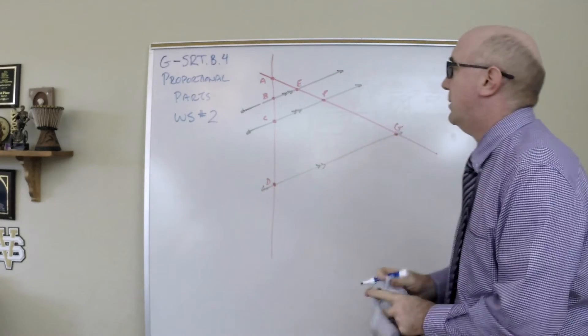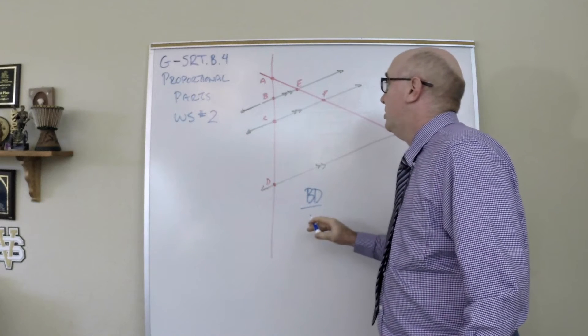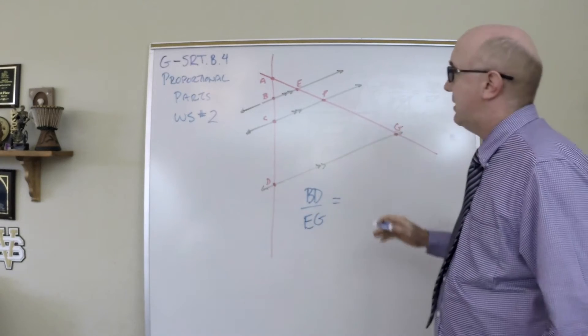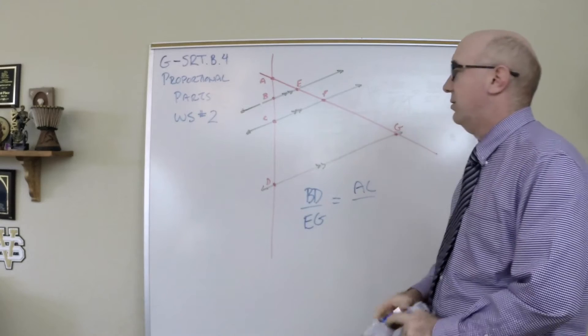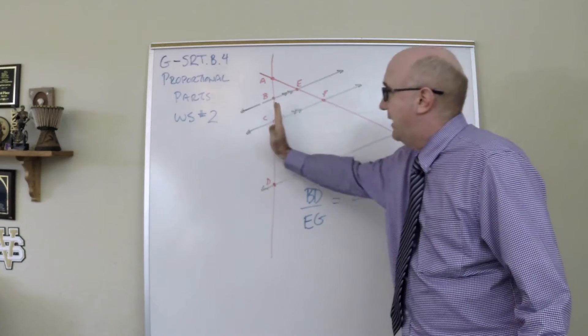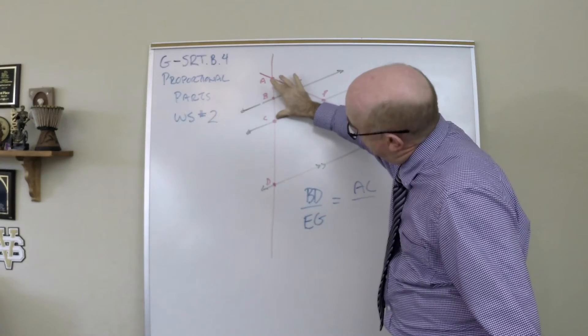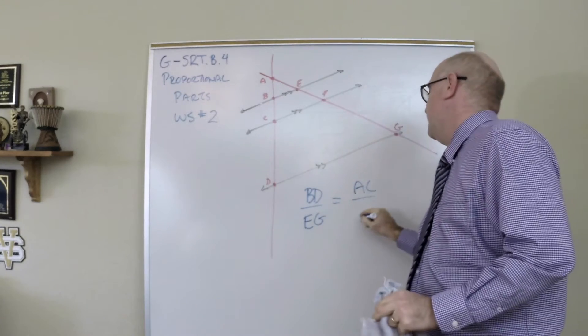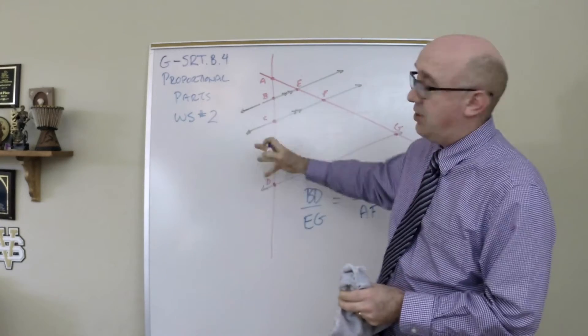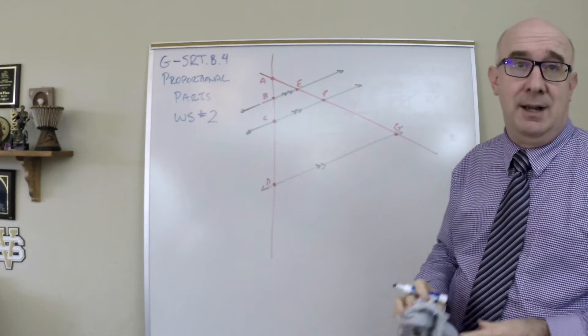Let's try another one, a little bit different. BD is to EG as AC is to... now this is a little trickier. Let's see if we can figure it out. BD is this length and it corresponds to EG, so AC then corresponds to AF. So we can compare across as well and not just on its side.